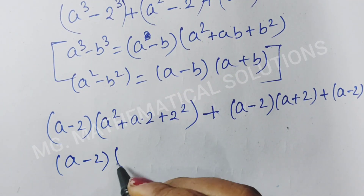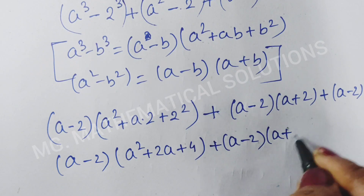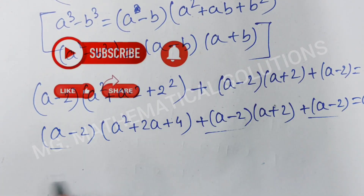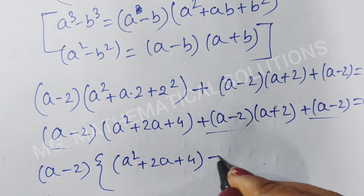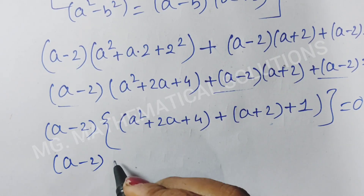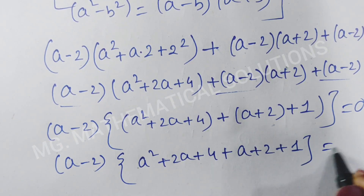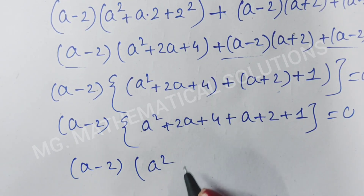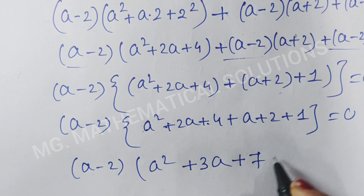So a minus 2 whole into a squared plus 2a plus 4, plus a minus 2 whole into a plus 2, plus a minus 2 equal to 0. Factoring out a minus 2, we get a minus 2 whole into a squared plus 3a plus 7 equal to 0.